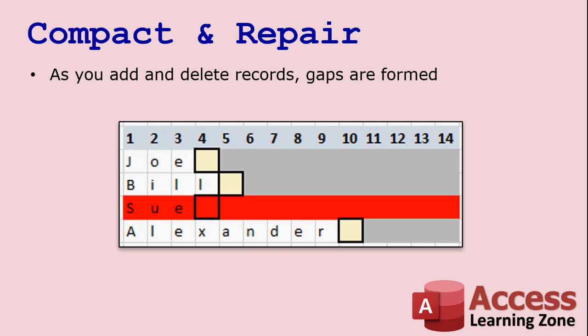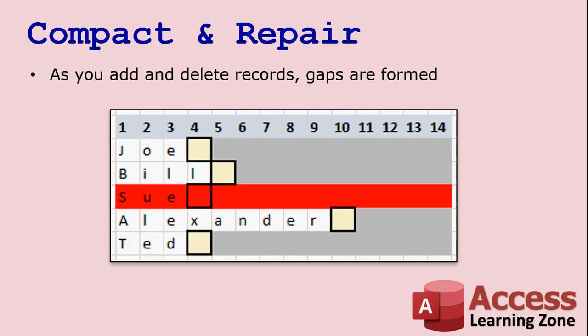However, if you delete Sue's record, you've got a gap there. Access just leaves it — it marks it deleted but the data still sits there. That's similar to how when you delete a file on your hard drive you can still undelete it. Access doesn't reclaim that space, it just sits there marked deleted. And when you add your next record it gets added on to the end of the table. So as you add and delete, you get these gaps and that space doesn't get reclaimed.